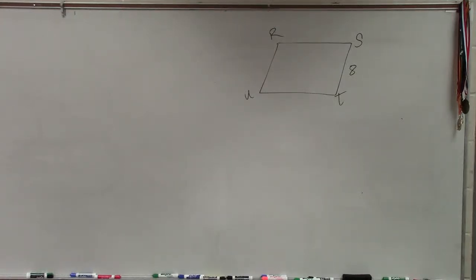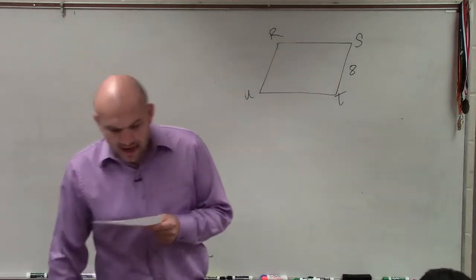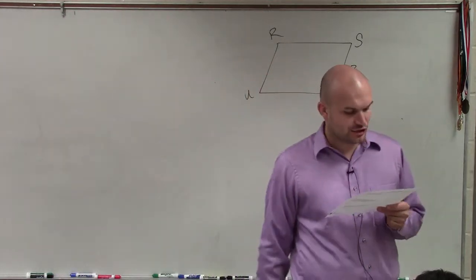So for this one, it says if the perimeter of a parallelogram R, S, T, U shown below is 42 units, how many units long is the line U, T?